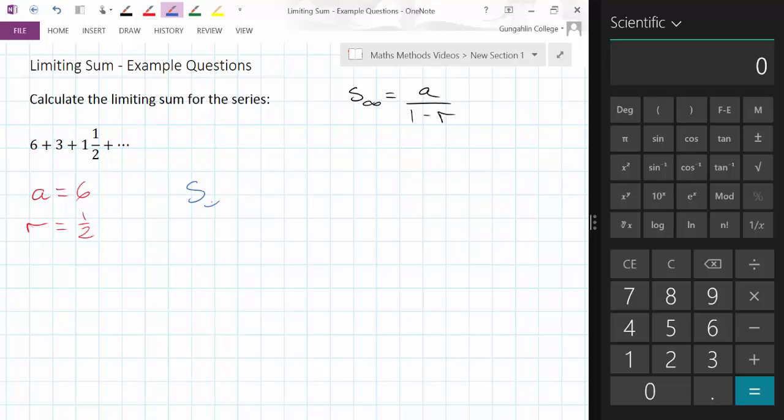So to get our limiting sum we would get 6 divided by 1 minus a half, or 6 divided by a half, and that's going to be 12.